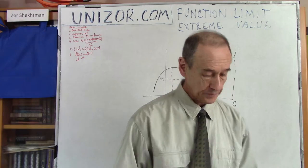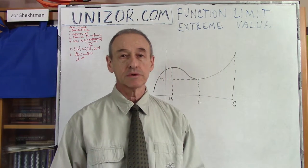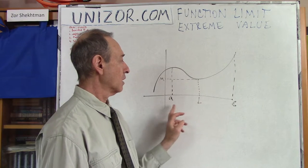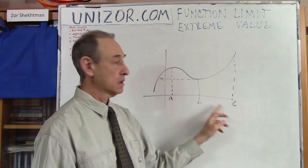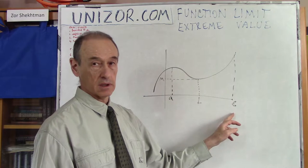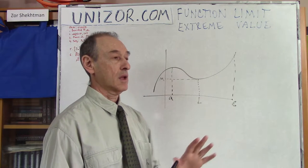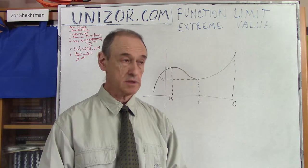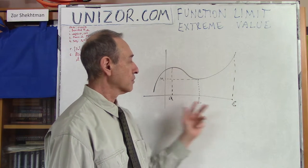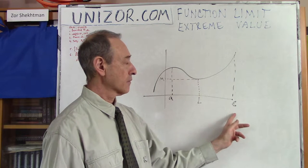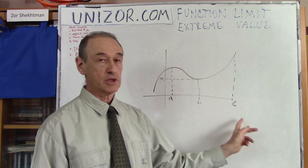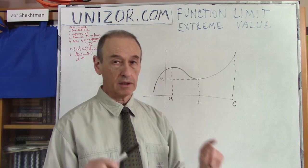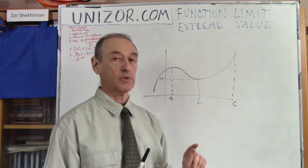Extreme value theorem. First of all, it's about continuous functions which are defined on a segment AB with both ends included. You have to really understand what continuous means. Secondly, you have to think about this particular segment from A to B — it's a segment, which means the endpoints are included. That's very important.